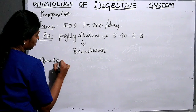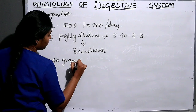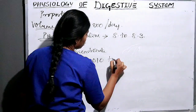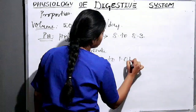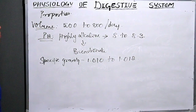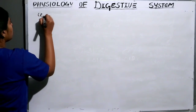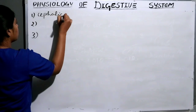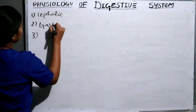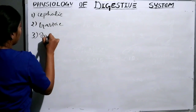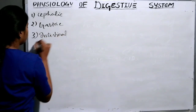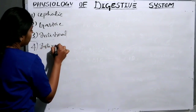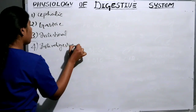Specific gravity ranges from 1.0102 to 1.012. Pancreatic juice secretion also consists of three phases: cephalic, gastric, and intestinal. A fourth phase is the interdigestive phase.